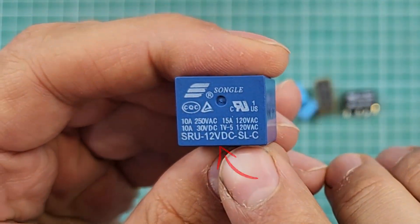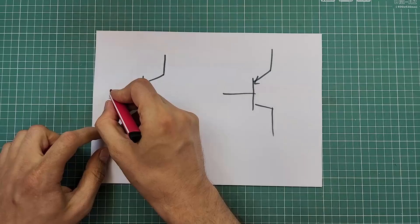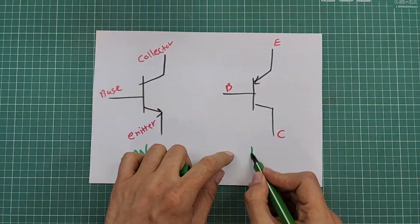Electronic circuits are like intricate puzzles made up of various electronic components. The first step in mastering circuit design, analysis, and repair is getting to know these components and understanding what they do. With countless components out there, each with its own variations, learning about them can feel a bit overwhelming — but don't worry, I'm here to help. In this video, I'm going to dive into five essential electronic components and explain how they work.